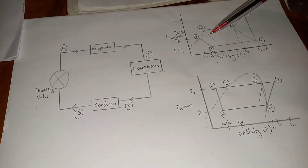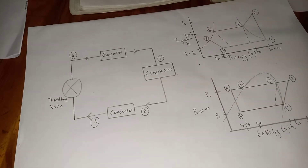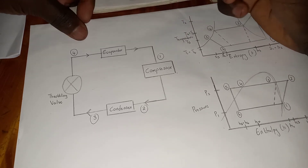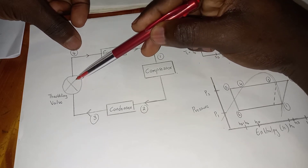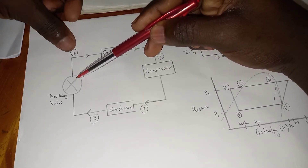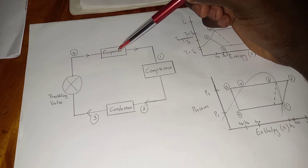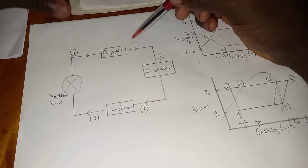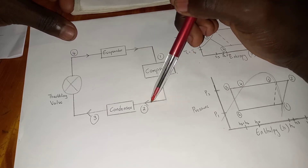The refrigerant is the liquid that flows through the refrigeration system. Starting from where the refrigerant is in liquid form, it flows to the evaporator. The evaporator heats this liquid into a dry saturated vapor, which then flows into the compressor, and from the compressor to the condenser.